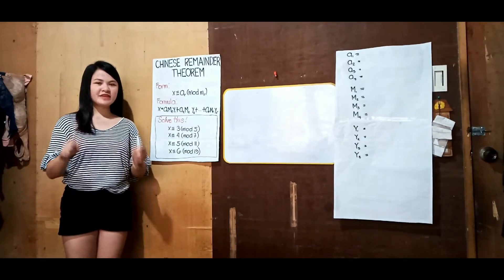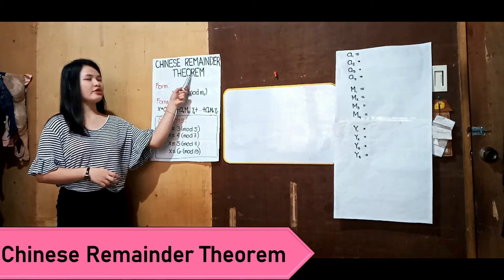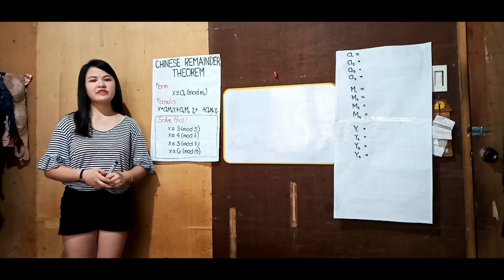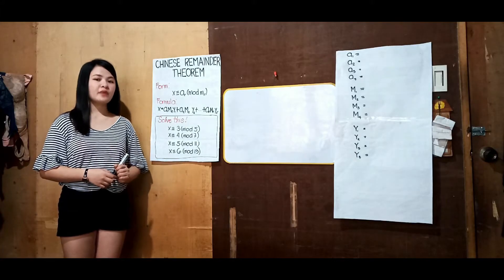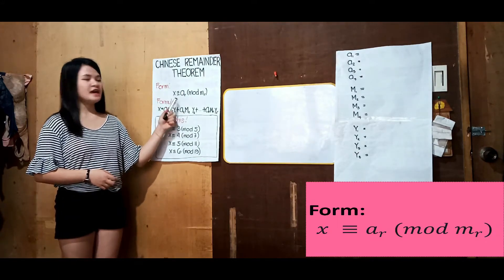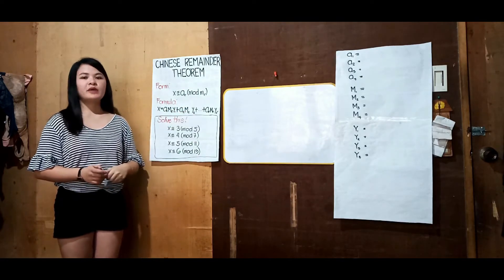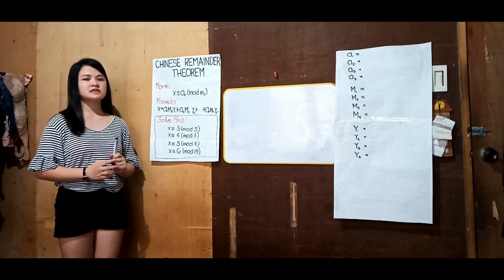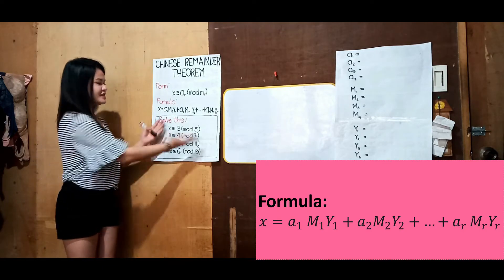In this video we are going to understand more about the Chinese Remainder Theorem. The best way to do it is to go through examples. In the Chinese Remainder Theorem we are solving a system of simultaneous congruent equations in the form x ≡ r (mod m_r), where r depends on how many equations you will solve. This equation is solvable by following a specific formula. Let us solve these four equations.